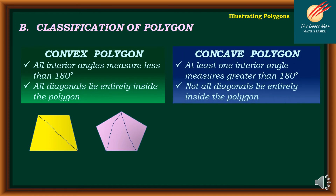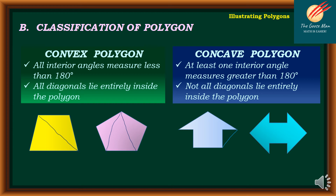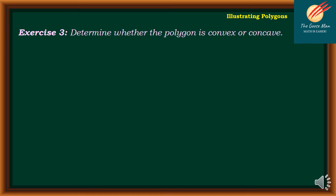On the other hand, a concave polygon means at least one interior angle measures greater than 180 degrees, and not all diagonals lie entirely inside the polygon. For instance, if I draw a diagonal from one vertex to another, it is not entirely inside the polygon — the diagonal lies outside. So it means it is concave.